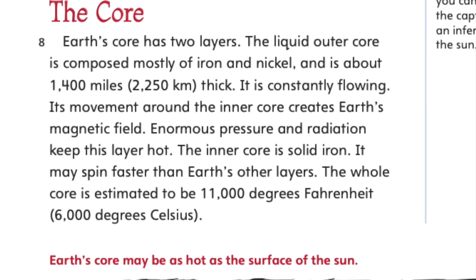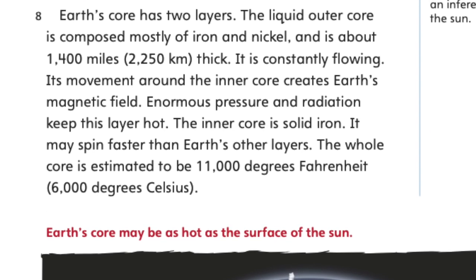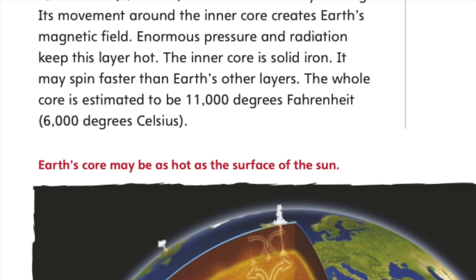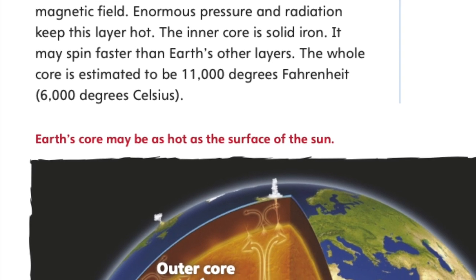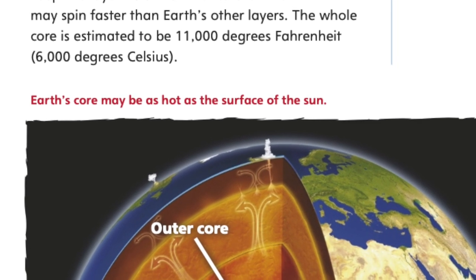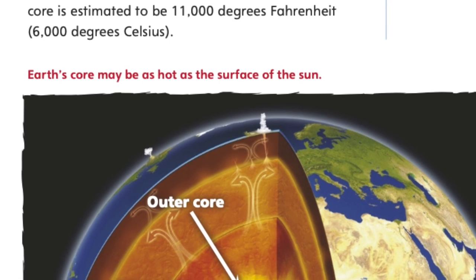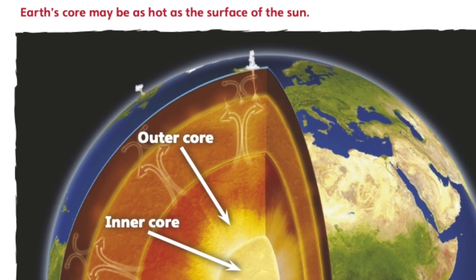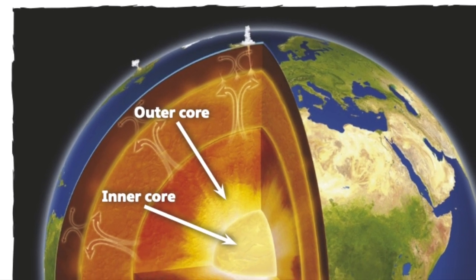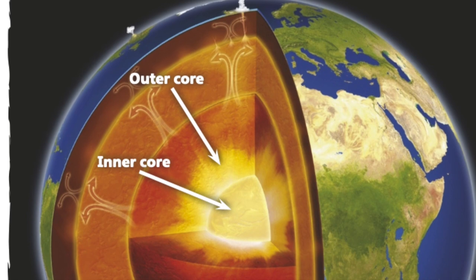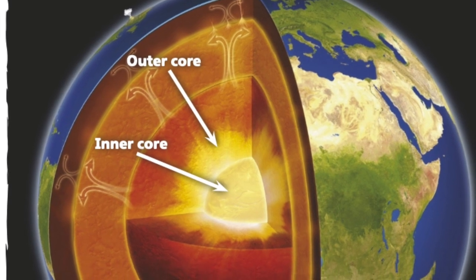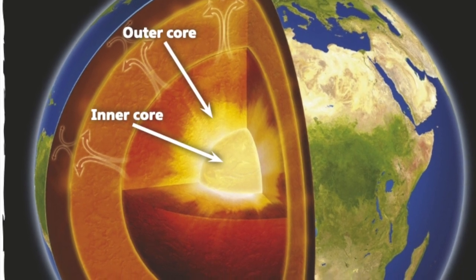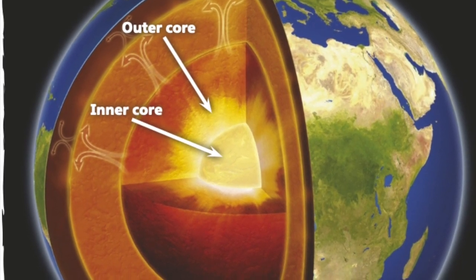The core. Earth's core has two layers. The liquid outer core is composed mostly of iron and nickel and is about 1,400 miles thick. It is constantly flowing. Its movement around the inner core creates Earth's magnetic field. Enormous pressure and radiation keep this layer hot. The inner core is solid iron. It may spin faster than Earth's other layers. The whole core is estimated to be 11,000 degrees Fahrenheit.